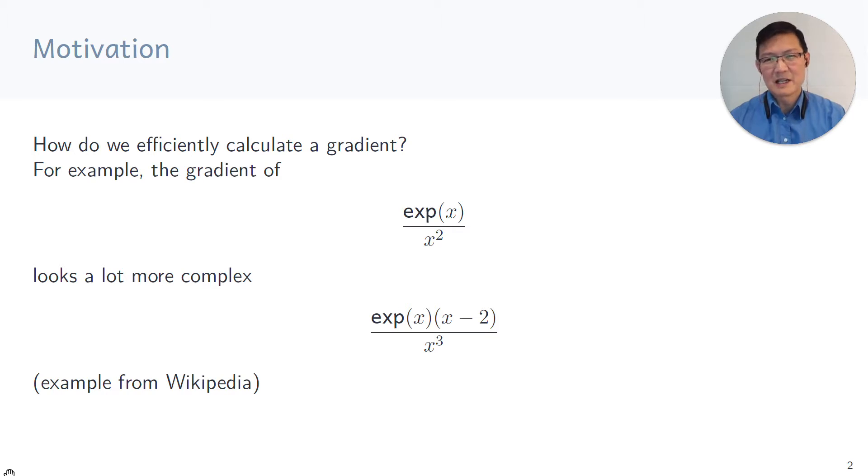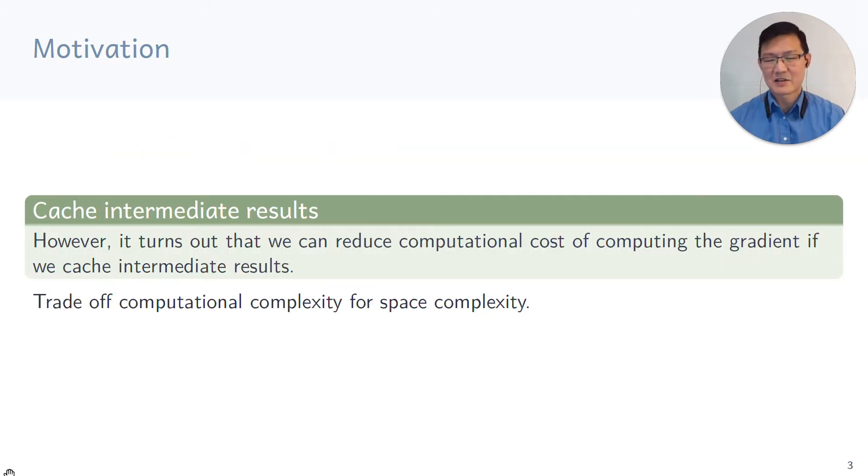How do we efficiently calculate gradients? For example, this example from Wikipedia, which is the exponent of x divided by x squared. If we take the gradient of this using symbolic manipulation, we get an expression that looks more complex.